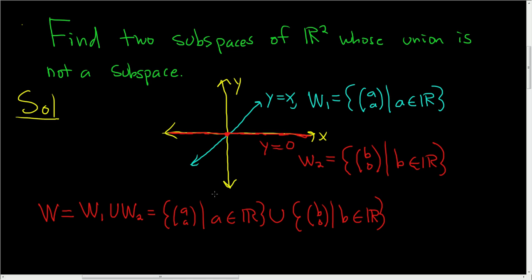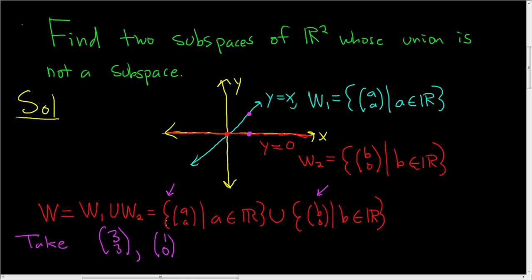Intuitively, here's why it fails: if I pick a vector on one line and a vector on the other line and add them, the resulting vector may or may not lie on either line. So let's take two simple vectors. Take (3, 3) — that's in W₁ since both components are equal, so it's certainly in W. And take (1, 0) — that's in W₂ since the second component is zero — so it's in the union, and certainly in W. Both of these vectors are in W.